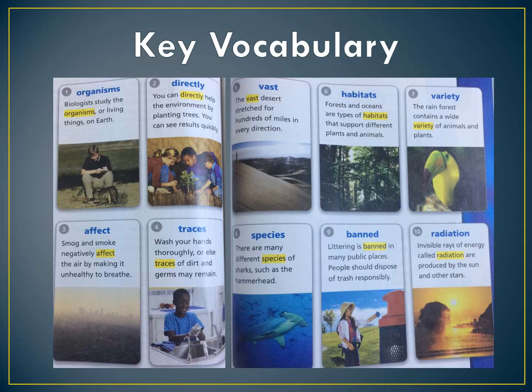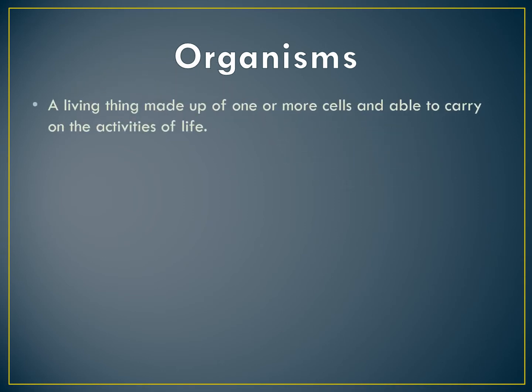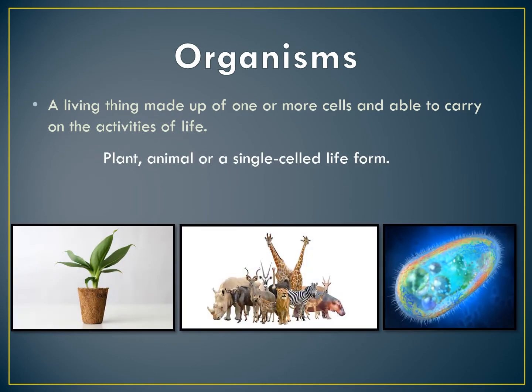This is what the key vocabulary looks like in your book — pages 436 and 437. The first word is organisms. A living thing made up of one or more cells and able to carry on the activities of life. Examples include a plant, an animal, or a single-celled life form. The last picture is probably bacteria or a single-celled life form. You guys should have covered this in science.